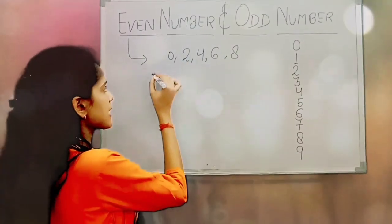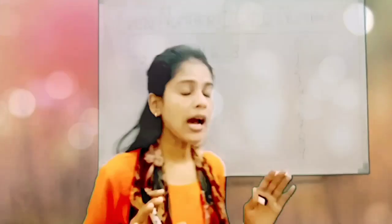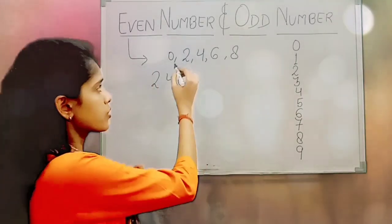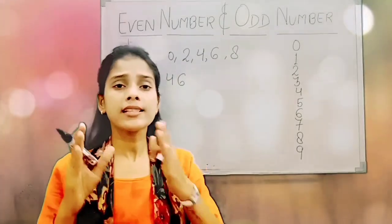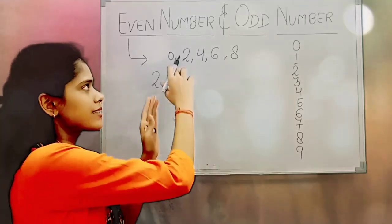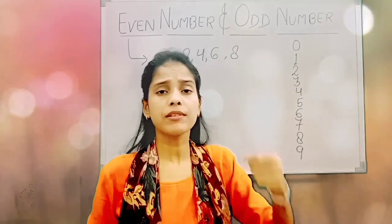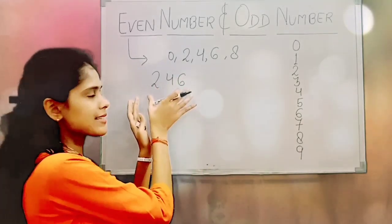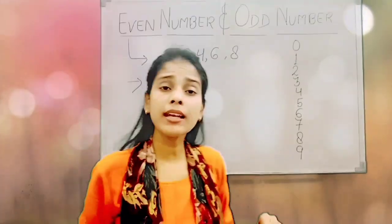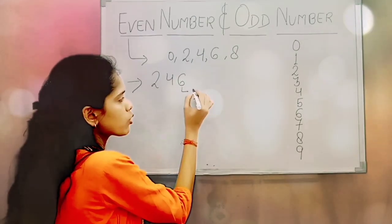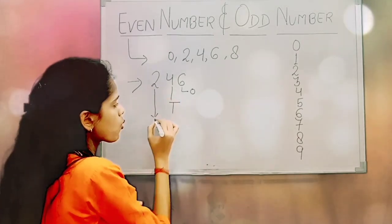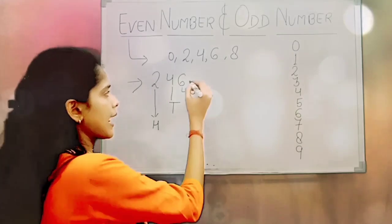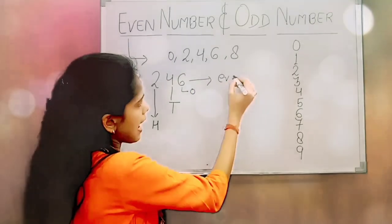For example, I have taken 246. Now I am going to ask you: is 246 an even number or not? If a number has 0, 2, 4, 6, or 8 in the ones place — agar kisi bhi number mein ones ki place pe 0, 2, 4, 6, ya 8 likha ho — then that number is even. The ones place is the first place; second place is tens, and third place is hundreds. So in 246, what digit is at the ones place? That is 6. So this number is considered an even number.